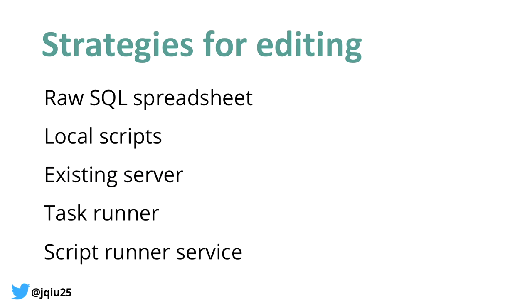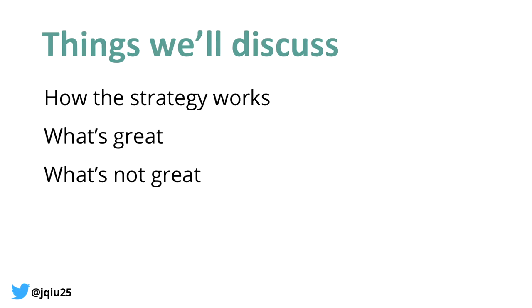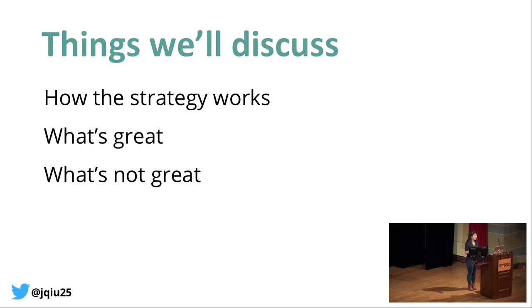Today we're going to talk through five different strategies. These include maintaining a raw SQL spreadsheet, running scripts locally, running scripts on an existing server, using a task runner, and building out a fully fledged script runner service. We're going to walk through each of these strategies in order of the amount of effort it takes to implement them, and also plot them in terms of the benefits you'll receive. The examples I'll use involve a Python stack and a SQL database, but these strategies will work for any stack of your choice.